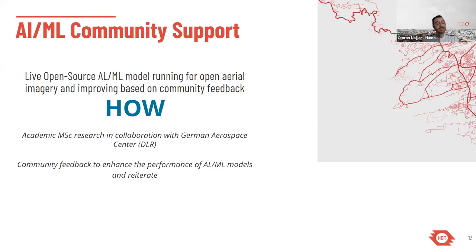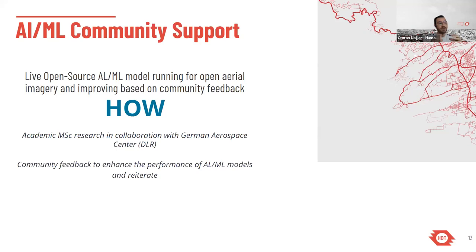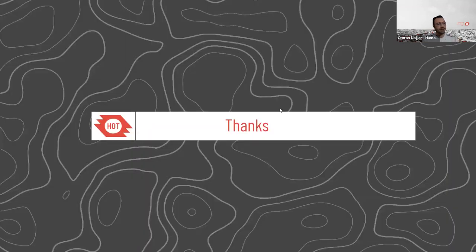The main missing component in all previous AI and ML projects is feedback — having community feedback to improve the models. Previous projects produced open predicted features like buildings and roads, but the models themselves are not open source, so we cannot feed corrections back to improve them. What we are now looking at is taking corrected features and telling the model where enhancements can be made, producing a new version of the model with increasing quality and better predictions.